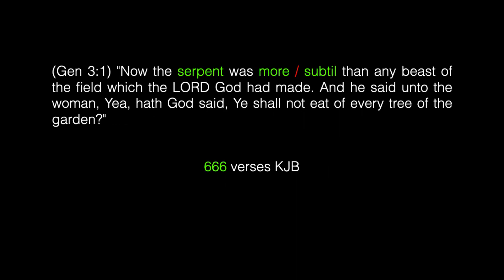Let's go to the Garden of Eden — Genesis 3:1: 'Now the serpent was more subtle than any of the beasts of the field which the Lord God had made. And he said unto the woman, Yea, hath God said, Ye shall not eat of every tree of the garden?' The word 'serpent' combined with the word 'more' combined with the word 'subtle' appears in 666 verses of the King James Bible. The word 'serpent' and the word 'subtle' combined appear in 37 verses of the King James Bible.